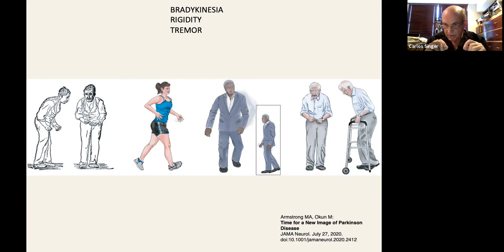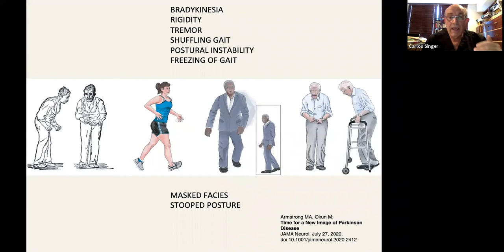Now, tremor is only present in 80%, not present at 100%. So there are cases that don't have tremor. You also have, as the disease progresses, shuffling gait, postural instability, freezing of gait. And we have other features that we recognize. They're not present in all patients, but you can have mask facies and stoop posture and among other things.